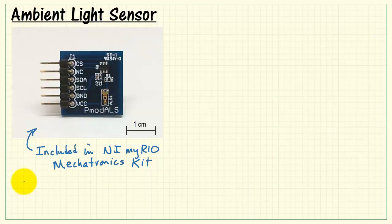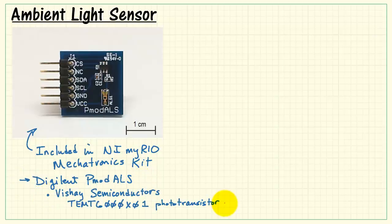This is the ambient light sensor included in the NI MyRio mechatronics kit. It's the Digilent PMOD ALS, based on a phototransistor from Vishay Semiconductors as well as an analog to digital converter from Texas Instruments. That's located right here.